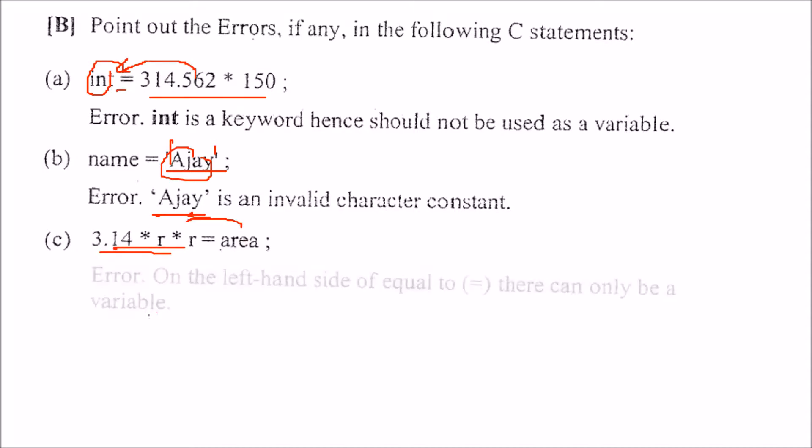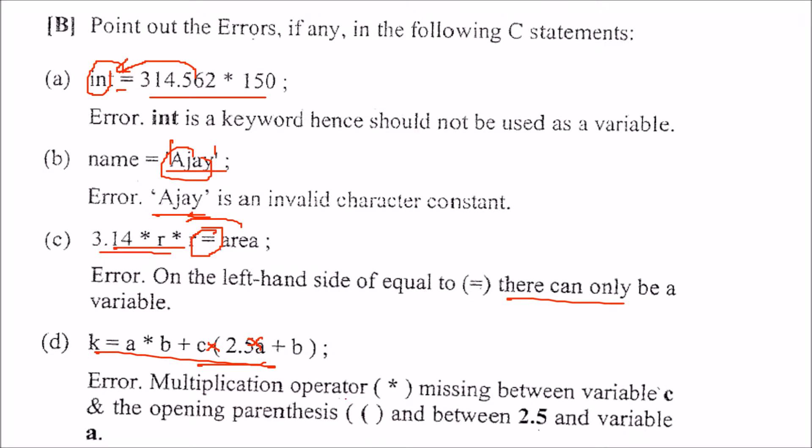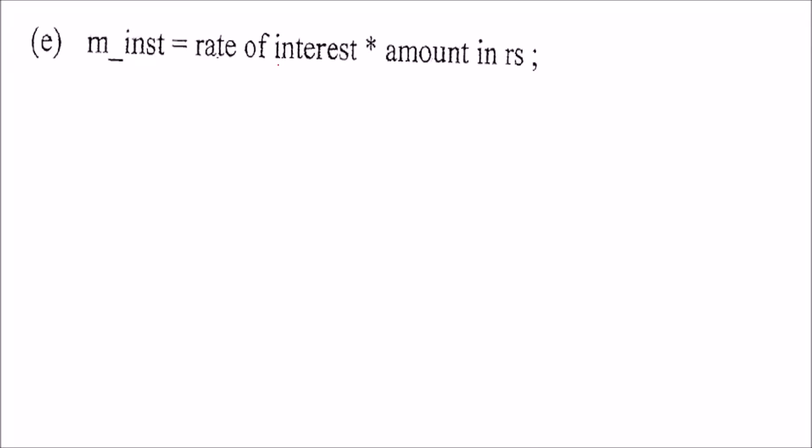Ajay is an invalid character constant. You cannot assign on the left this value. You can have just one variable. So on the left hand side of this is equal to or you can say an assignment operator, there can only be a variable. This, because we don't have c cross or 2.5 cross a, this is the error. So we have to insert. This is not implicit. It means compiler will not understand this.